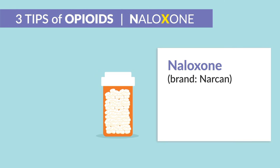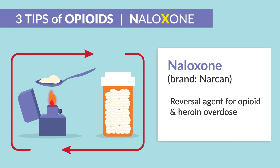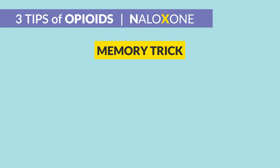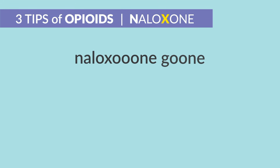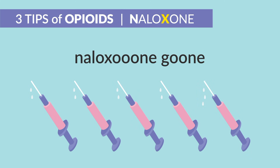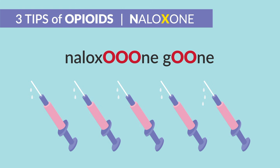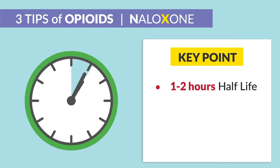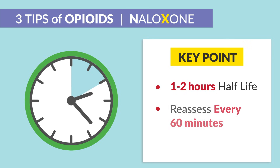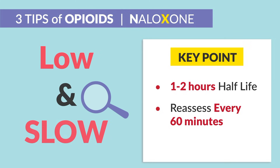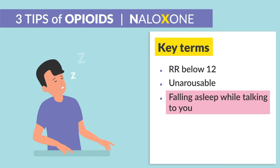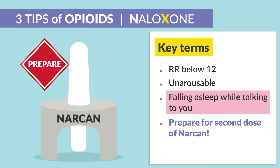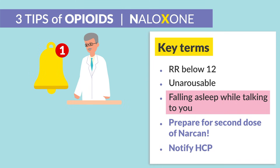Naloxone is an opioid antagonist — a reversal agent for opioid overdose as well as heroin overdose. The memory trick: the X in naloxone puts an X on the O's in opioids. The bad news is that it's gone quickly, so we usually have to give multiple doses. Naloxone has a one to two hour half-life, so we always reassess every 60 minutes and monitor for persistent low and slow vitals. Key terms to write down: respiratory rate below 12, unarousable, falling asleep while talking. Prepare for a second dose of Narcan and notify the HCP if any of these are present.